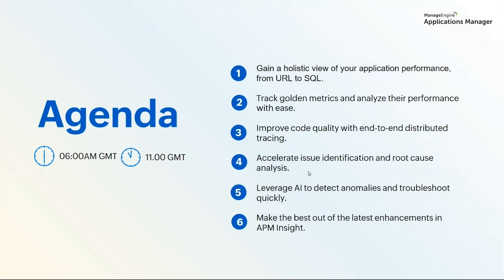Let's take a quick look at what we've got lined up for today. We'll deep dive into our applications architecture, covering everything from URLs to SQL. We'll also look at the golden metrics you need to monitor and improve application performance. Additionally, we'll walk you through how you can improve code quality with end-to-end distributed tracing and accelerate issue identification with AI. Lastly, we'll share the latest enhancements in our APM Insight module — our Application Performance Monitoring module — and some tips on how you can make the best out of it.